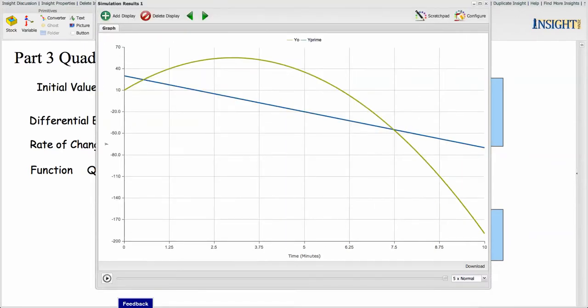So the blue line is the straight line, is y prime. It's linear. Y prime is linear. And look at this, y. The quadratic equation gives us a curve. It's a parabola. Let's watch this again.